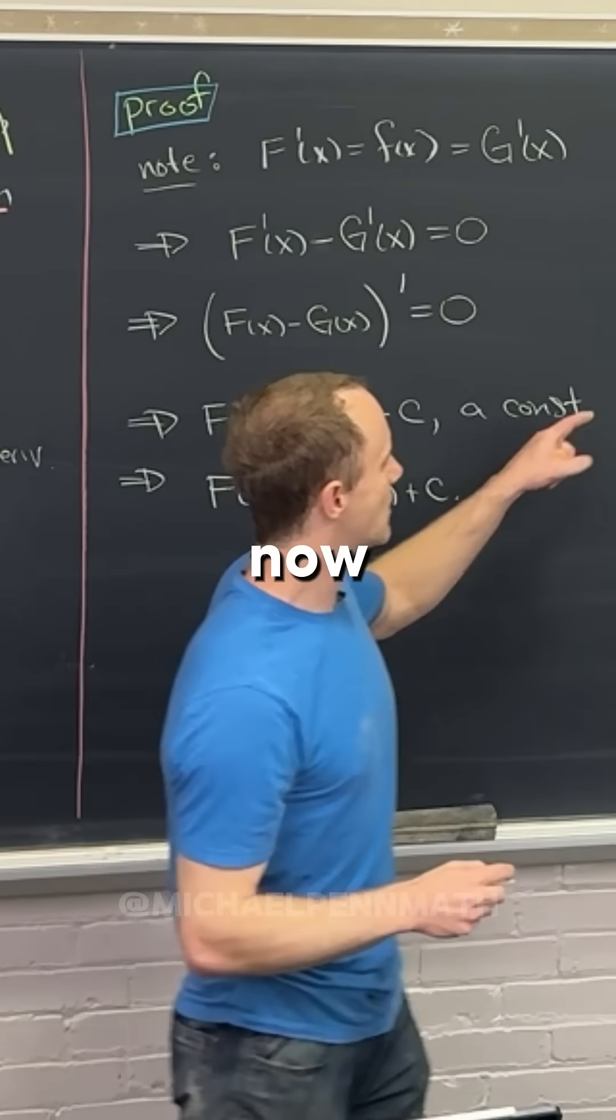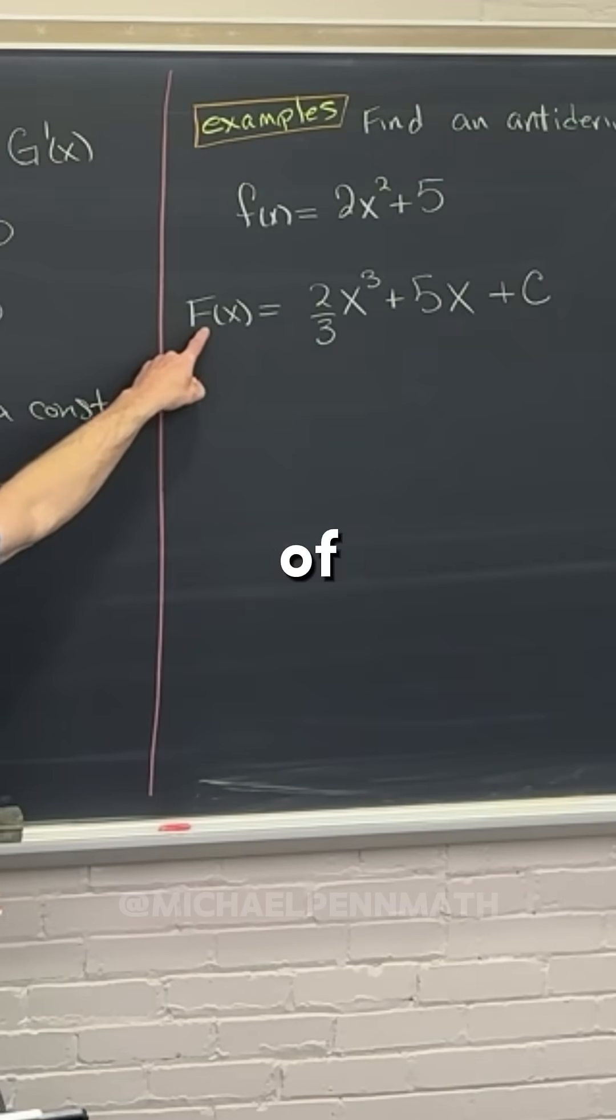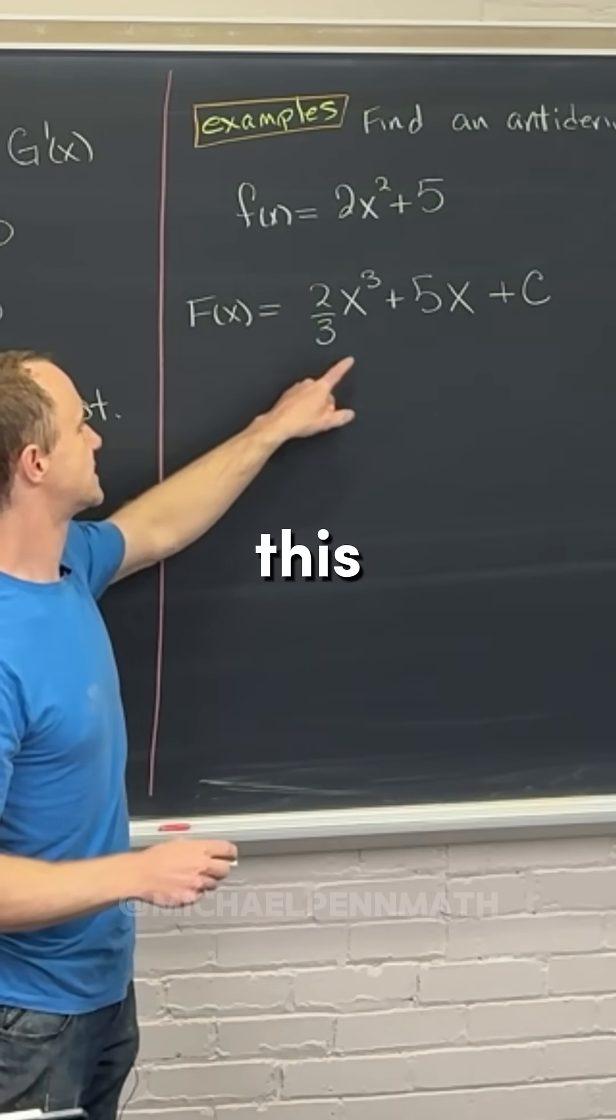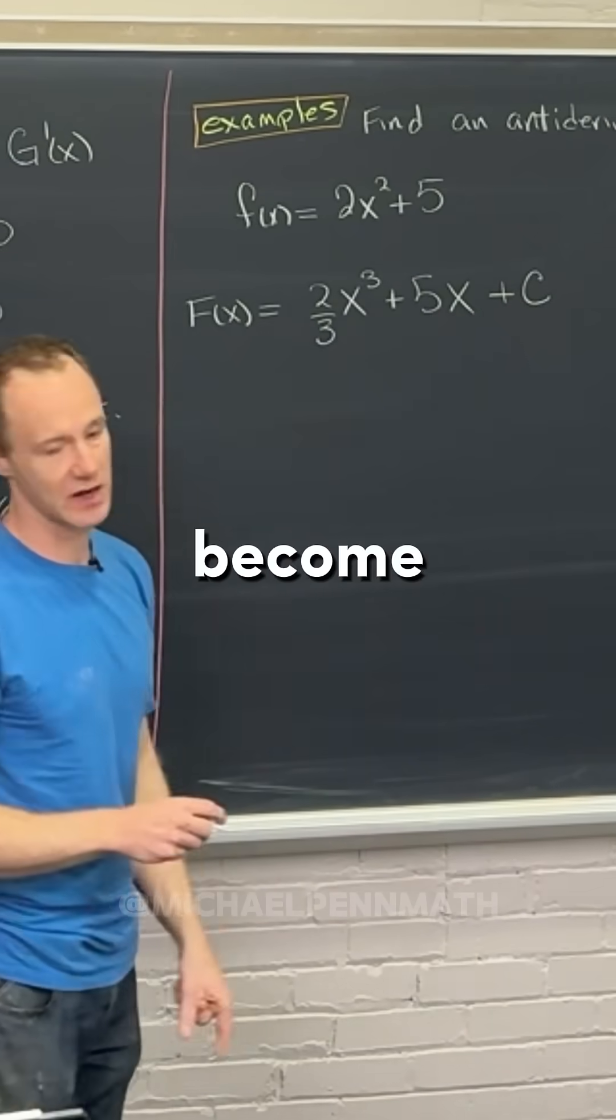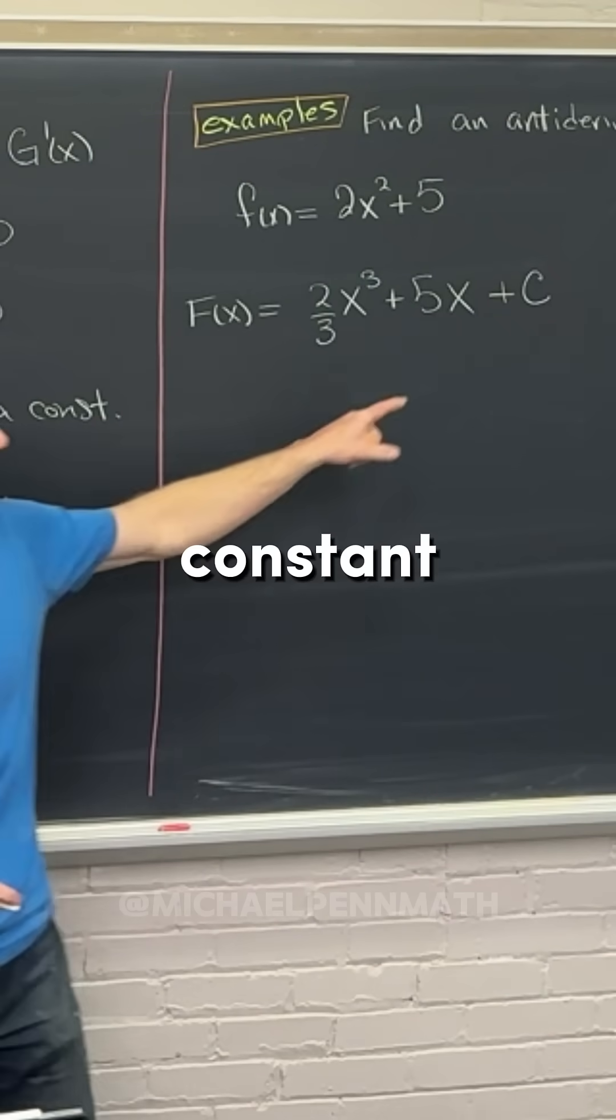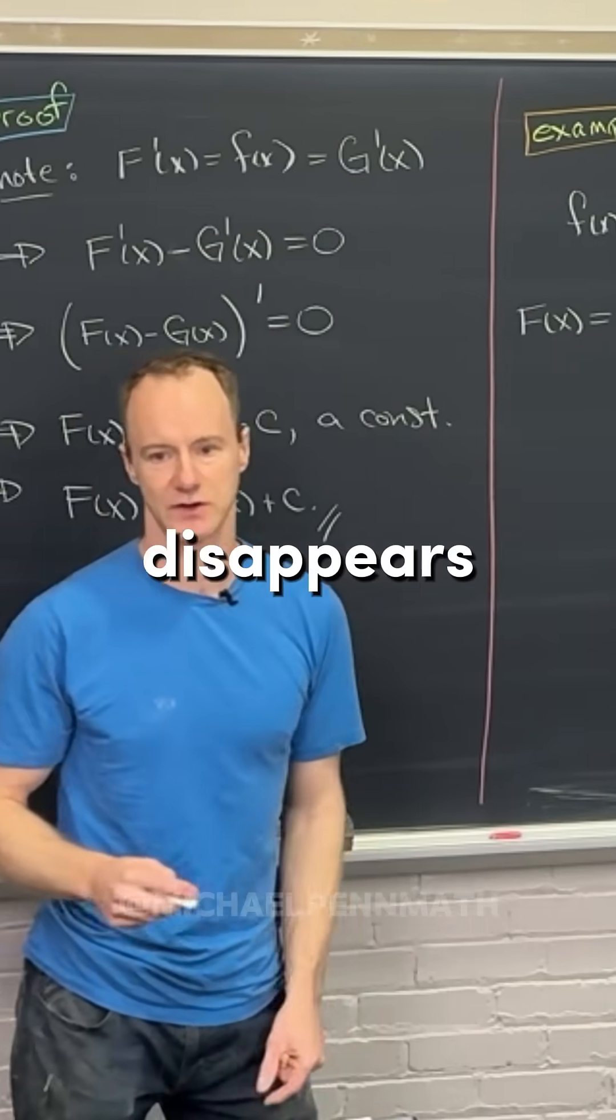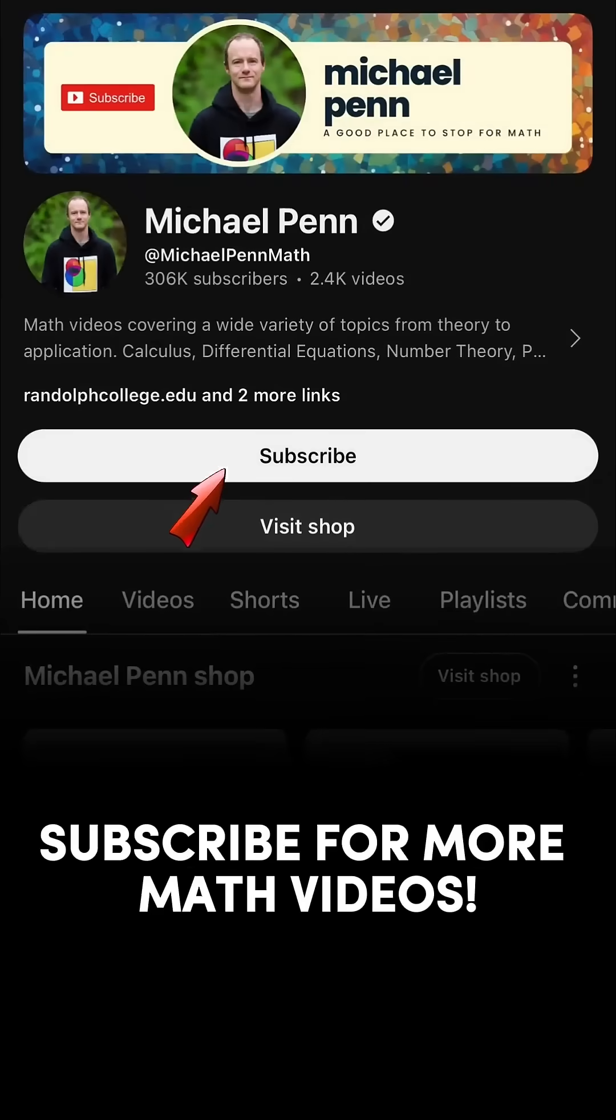So now look at this. If we were to take the derivative of capital F, as we discussed, this two-thirds x cubed is going to become 2x squared, this 5x is going to become 5, and then the derivative of a constant is zero, so that disappears.